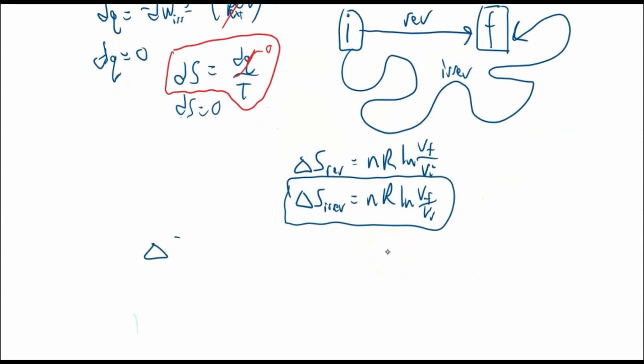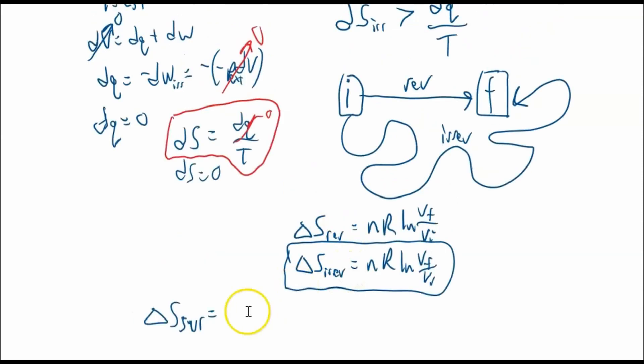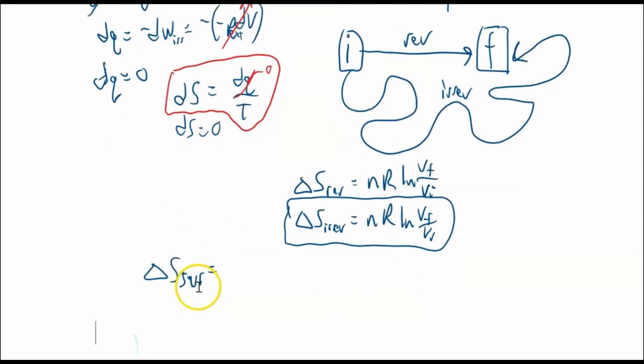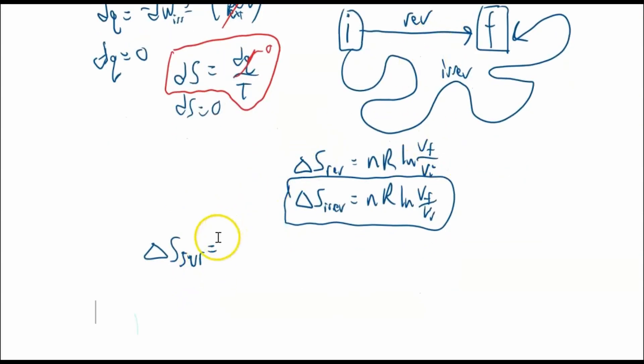If we want to know the change in entropy of the surroundings, we just did the system, now the surroundings. Now we can, this whole reasoning applies because for a reversible and an irreversible process, the change in entropy of the surroundings equals the heat transfer to the surroundings or from the surroundings over temperature. This is zero. So that means there's no change in entropy of the surroundings. That's zero.